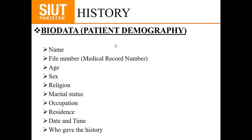We start our history by taking the biodata and patient demography: name, medical record number, if there is any previous record, age, sex, religion, marital status, occupation, residence. Also mention the date and time, and who gave the history.